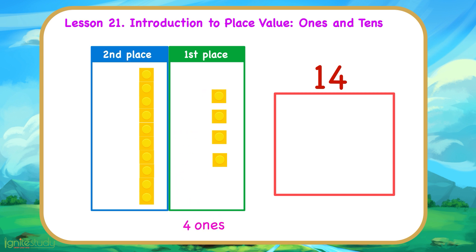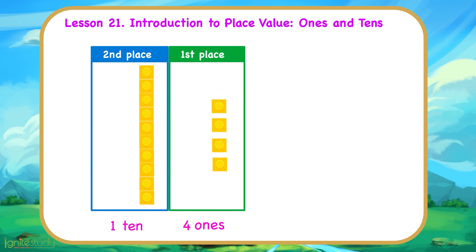In the 2nd place, we have 10 blocks. Each represents a 1. So, here, we have 10 ones. We can consider these 10 ones as 1 group of 10 and say 1 ten. So, here, we have 1 ten. As you can see, 1 ten and 4 ones is 14.